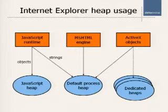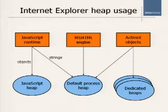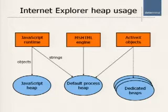Windows processes usually have at least one heap, which is called the default process heap, and it's created during the process initialization. But they can also create special dedicated heaps, so different components have the capability to use different heaps. If we look at what kind of heaps the different Internet Explorer pieces use, we'll see that most of them actually use the default process heap.